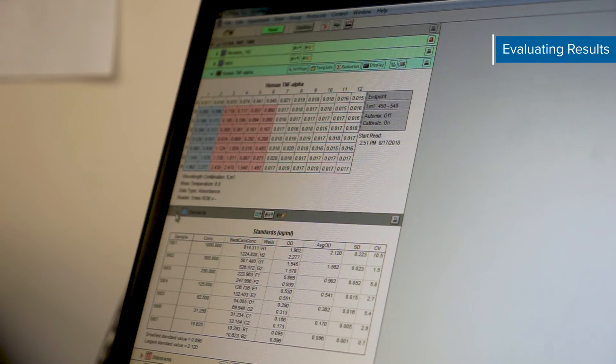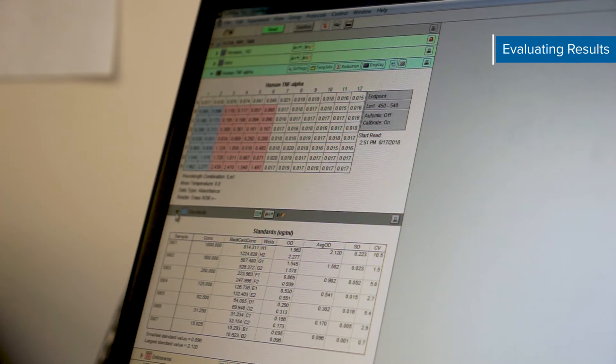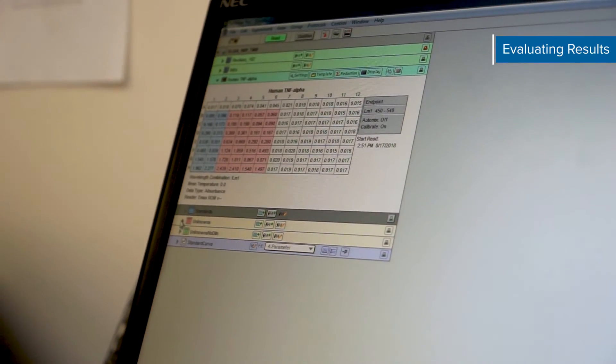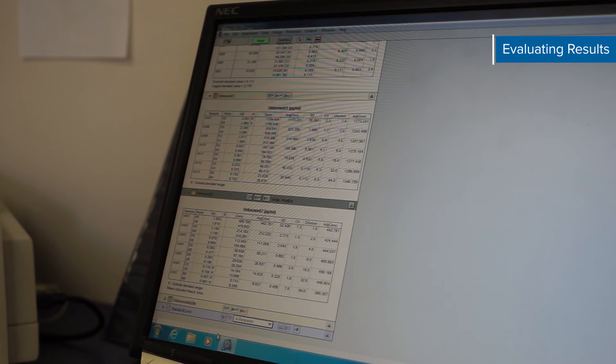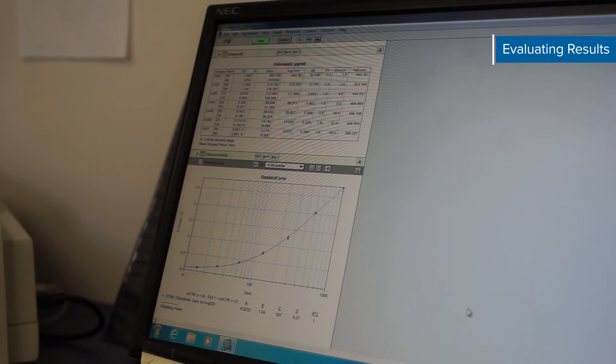Average the duplicate readings for each standard control and sample and subtract the average zero standard optical density. Create a standard curve by reducing the data using computer software capable of generating a four parameter logistic curve fit.